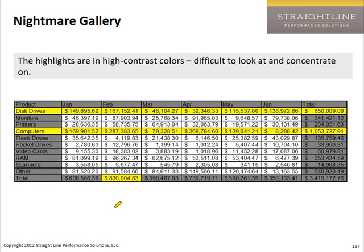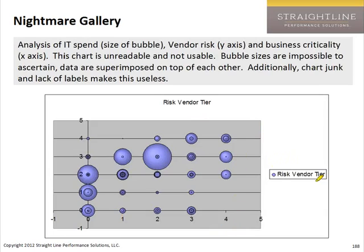Think about that when you use default colors in Excel — red, yellow, green. If you want people to actually look at your displays and analyze them for some time, you'll do better to use low contrast red, green, and yellow than high contrast. This next one was a big thing a few years back — people were using lots of bubble charts. This is supposed to show risk by vendor tier for IT spend: the bubble size is IT spend, vendor risk is the y-axis, and criticality is the x-axis. It just doesn't even make sense for the chart. Admittedly this is difficult because we have three dimensions, but this one did not achieve a good result.